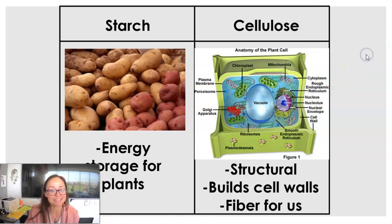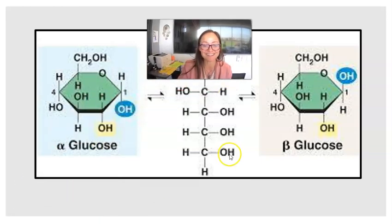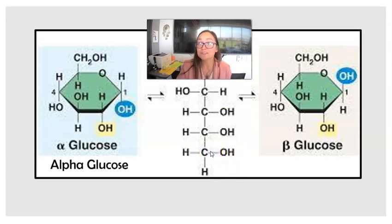So now let's go ahead and see the difference in the monomers that build starch and cellulose. So both polysaccharides are made of glucose, starch and cellulose. However, starch is made of repeating alpha-glucose monosaccharides, while cellulose is made of repeating beta-glucose monosaccharides.